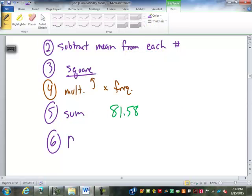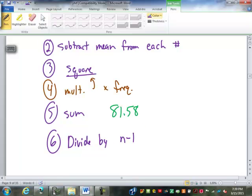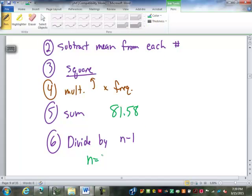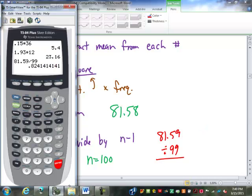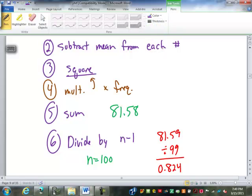Step 6, divide by n minus 1. Well for this set of numbers n is 100. We totaled up the frequency to get 100. So we are going to take 81.59 divided by 99, one less than 100. So we get 0.824. That would be the variance if we were looking for that but there's one more step left in the standard deviation which is square root.